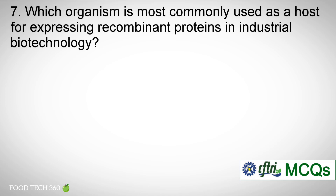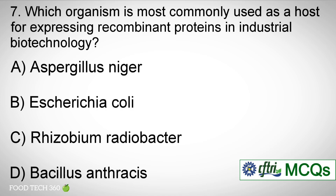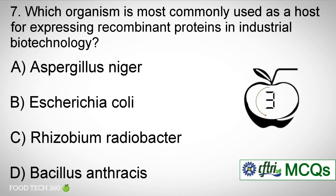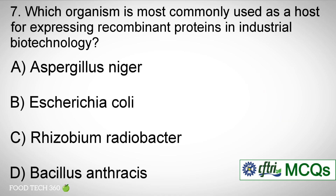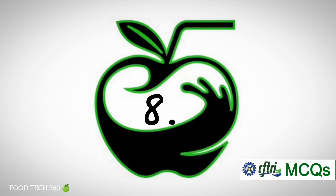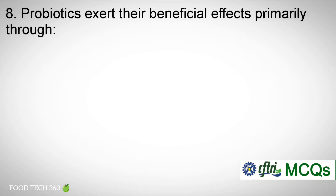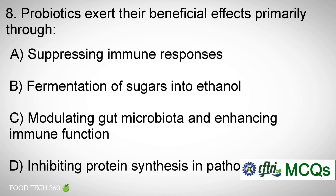Question number seven: Which microorganism is most commonly used as a host for expressing recombinant proteins in industrial biotechnology? Options: A) Aspergillus niger, B) Escherichia coli, C) Rhizobium radiobacter, D) Bacillus anthracis. Correct answer: B) Escherichia coli. Question number eight: Probiotics exert their beneficial effects primarily through — Options: A) Suppressing immune responses, B) Fermentation of sugars into ethanol, C) Modulating gut microbiota and enhancing immune function, D) Inhibiting protein synthesis in pathogens. Correct answer: C) Modulating gut microbiota and enhancing immune function.